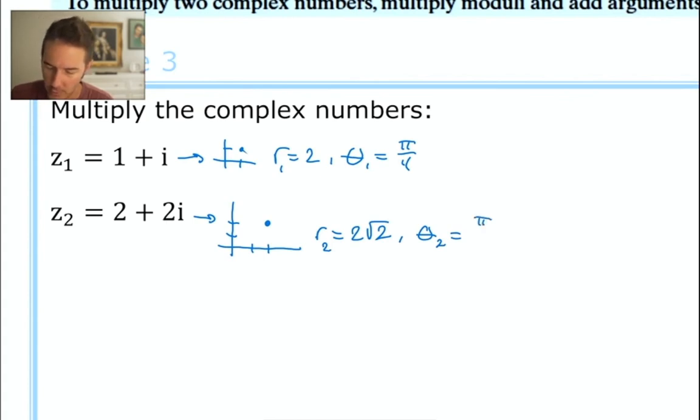The theta value here is going to be pi over 4 because we're still halfway up into the first quadrant. You would be taking the inverse tangent of 1, positive 1. Okay, so now we have our r and theta values.